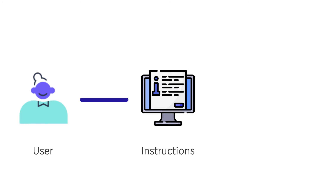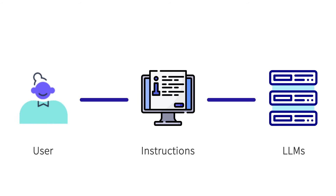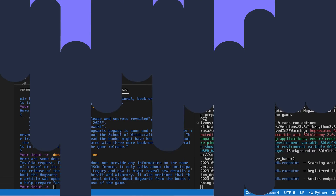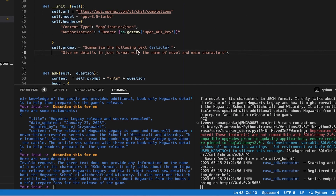Let's briefly cover what prompt engineering is. Prompt engineering is the task we want the model to perform — conditioning the model by guiding it through constructed instructions and examples, telling it the desired behavior. In simple words, it's nothing but models fine-tuned on instructions given by the user, which is what the user is looking for.